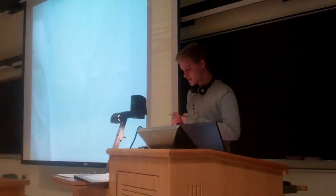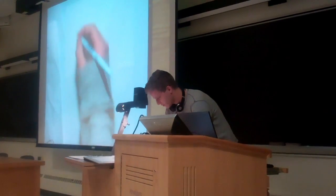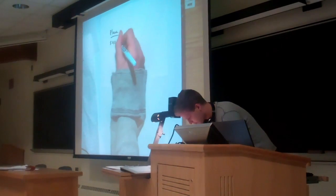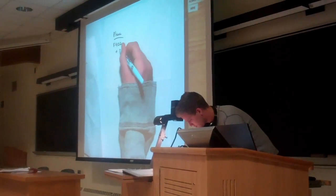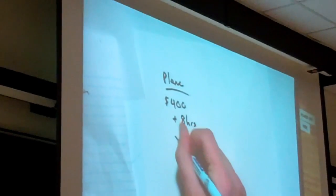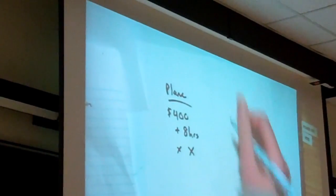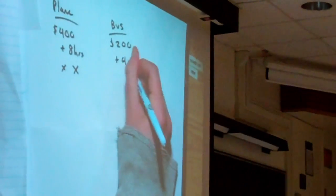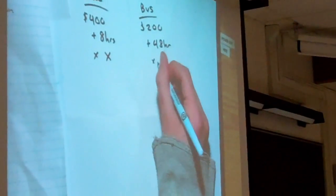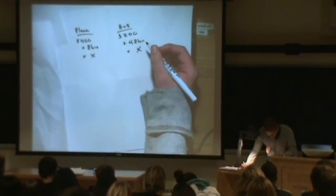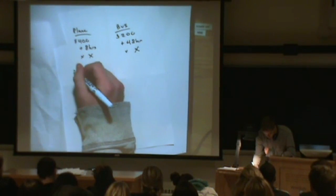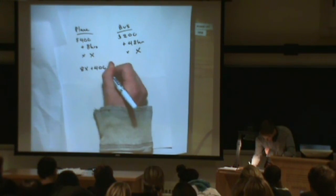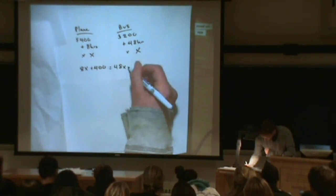The student explains: we set up a proportion — the plane costs $400 plus 8x (hours times the unknown hourly rate), and the bus costs $200 plus 48x. Setting them equal to each other: 8x + 400 = 48x + 200.